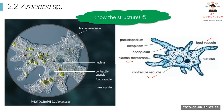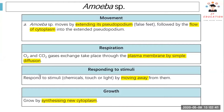The food vacuole forms when the amoeba has just eaten something. This is another photo of amoeba under a microscope. Amoeba moves by extending its pseudopodium — which is a false foot — by the flow of cytoplasm. They simply extend the pseudopodium to move around.